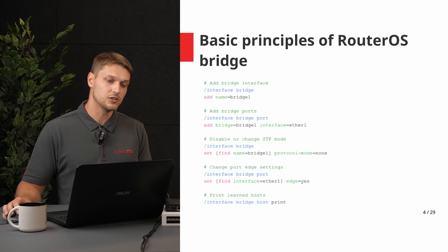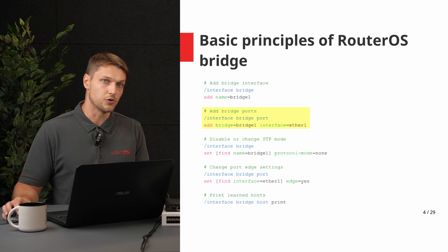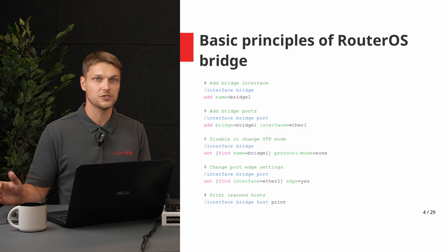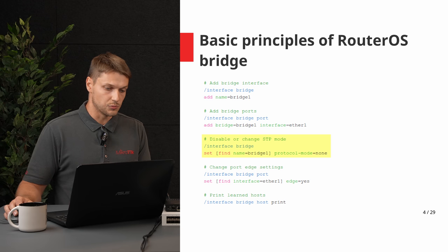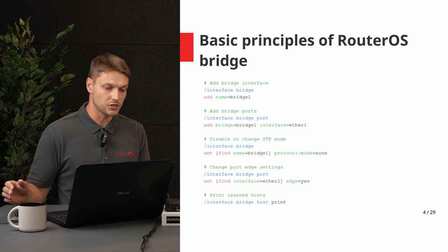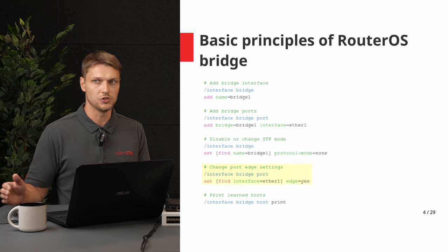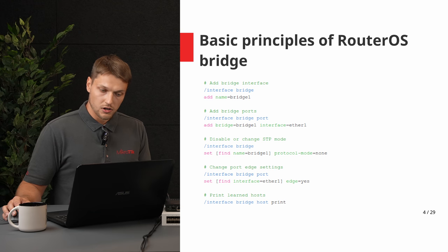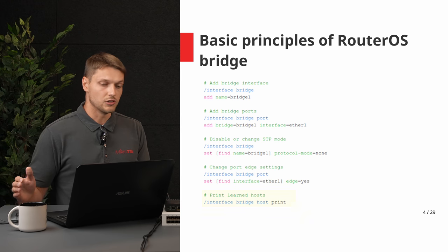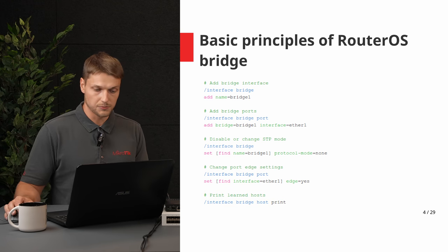Now let's look at how to configure a bridge in RouterOS. First, you need to add a bridge interface, then you can add bridge ports — these can be any interfaces with a MAC address. If you don't want to enable spanning tree, you can disable it with protocol mode none. You can also disable spanning tree on individual ports with the edge setting. To see all learned hosts, you can use the host print command.